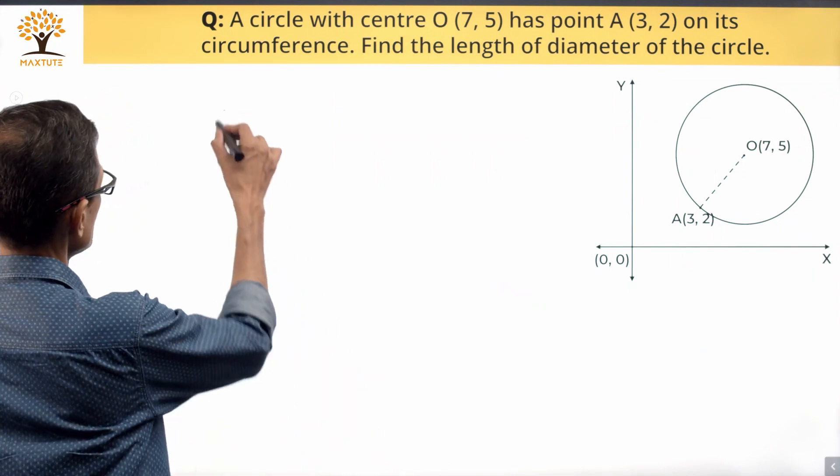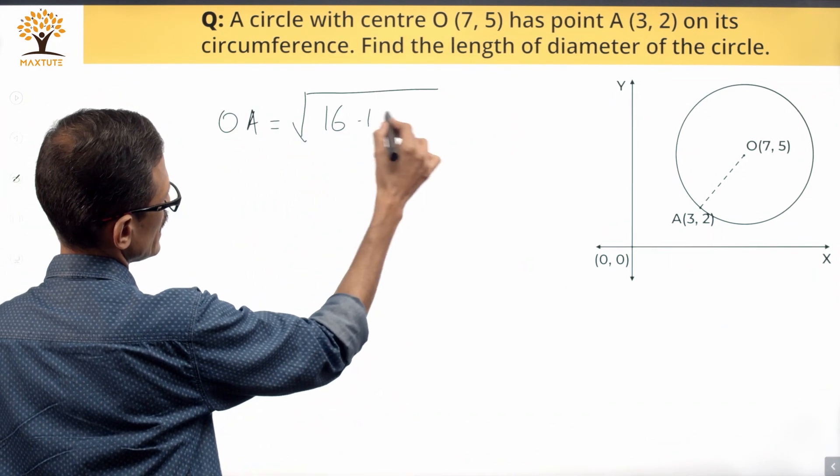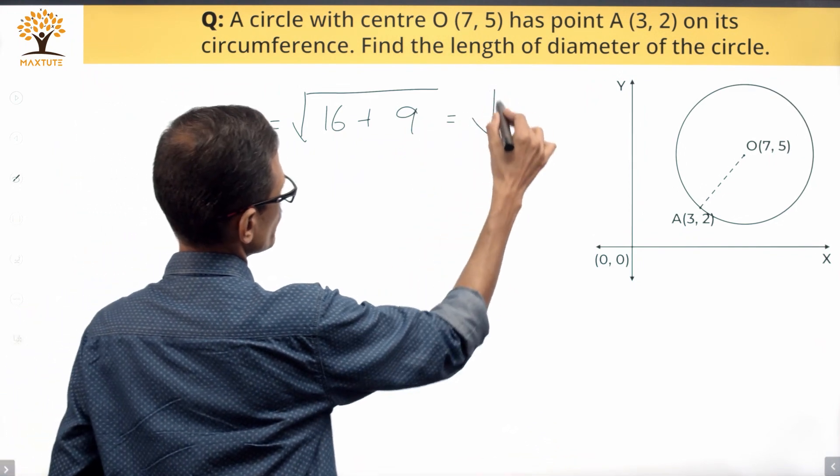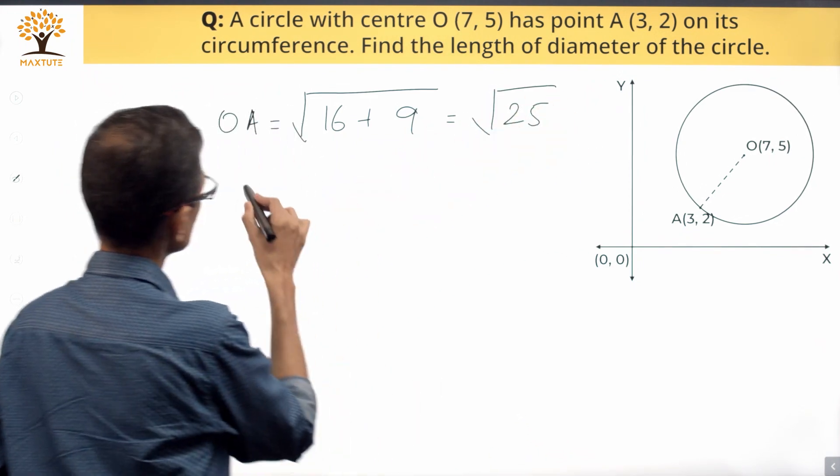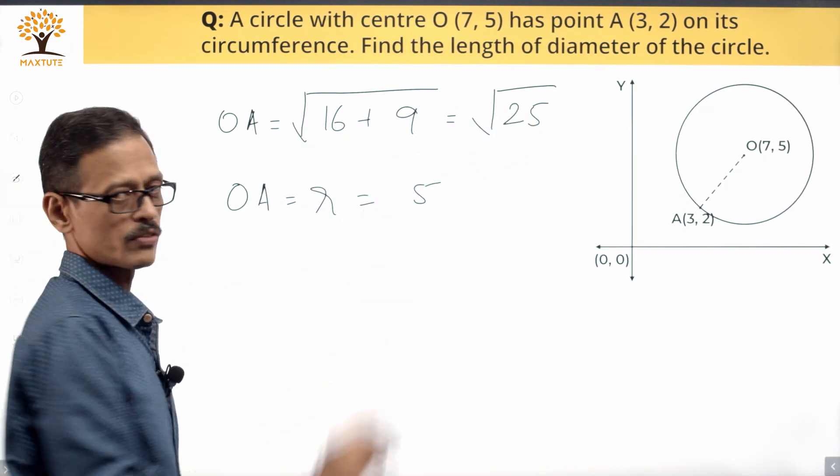So OA equals square root of (4 squared which is 16 plus 3 squared which is 9), which equals square root of 25. So OA, which is the radius, is equal to 5 units.